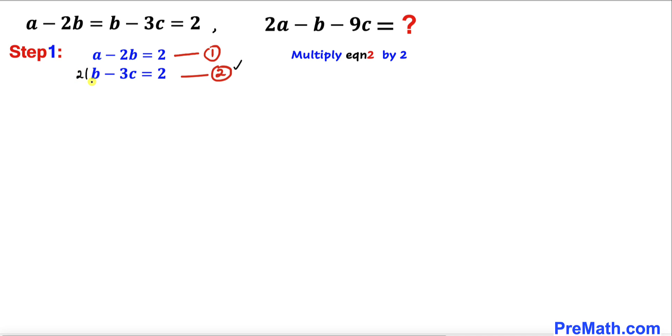I'm going to multiply on this side by 2 and multiply 2 on this side as well, so that is going to give us 2b minus 6c equals 4. On the right-hand side, it's going to become positive 4.